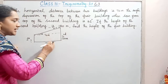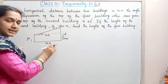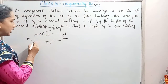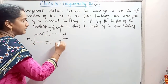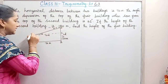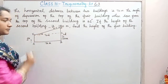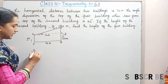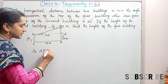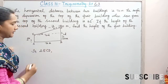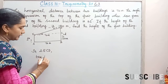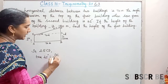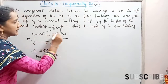Since both horizontal distances are the same, we get 70 meters here as well. Now, labeling the points as A, B, C, D, and E — if we take triangle E, C, D: in triangle ECD, tan 45 is equal to DC divided by EC.